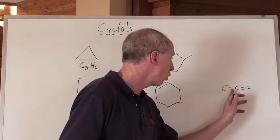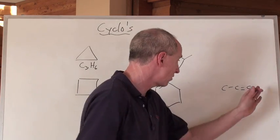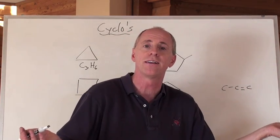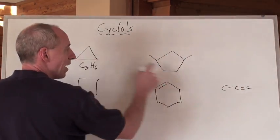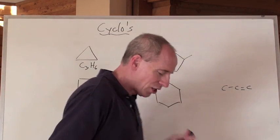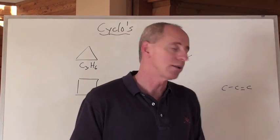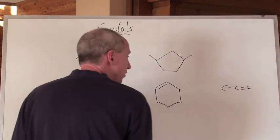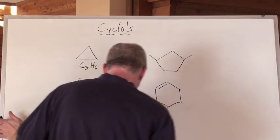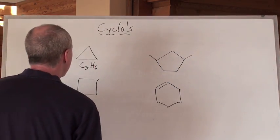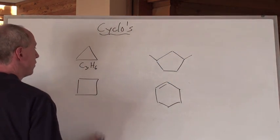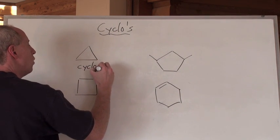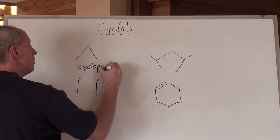That's still going to be propene at the one — prop-1-ene — and that's still prop-1-ene. That's all the isomers there are for that. But this ring structure is an isomer of that too. The general formula CNH2N can apply to double bonded molecules, but also cycloalkanes as well. That formula C3H6 — that's cyclopropane.